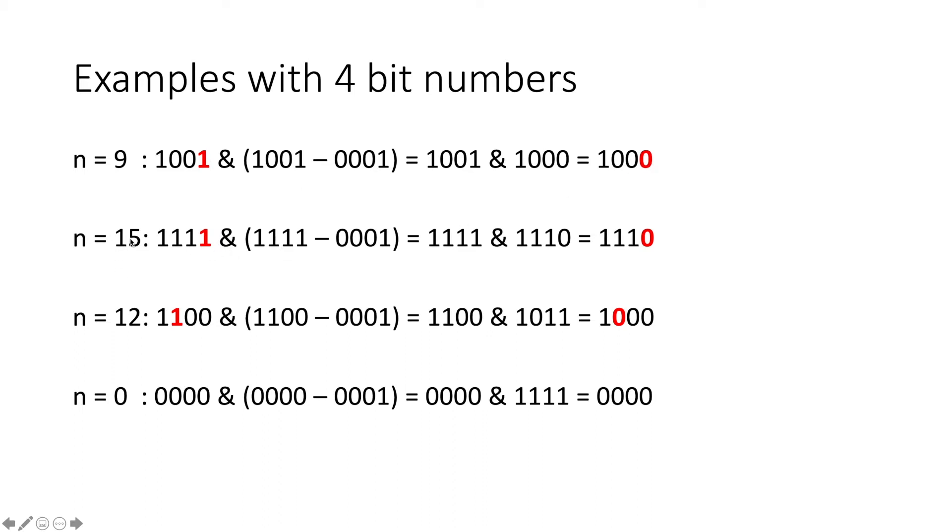Similarly, with n equals 15, the first bit is 1. When we AND it with itself minus 1, what we end up getting is 1110. So again, the lowest 1-bit has been set to 0.